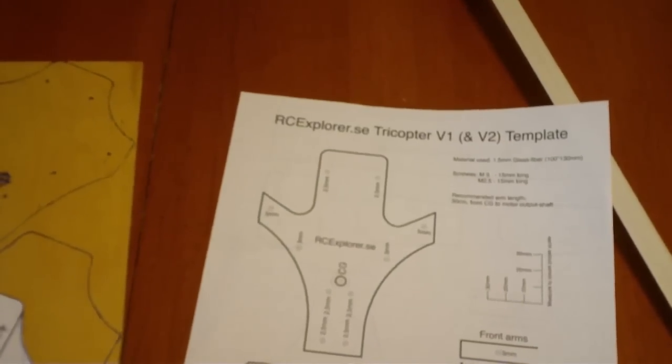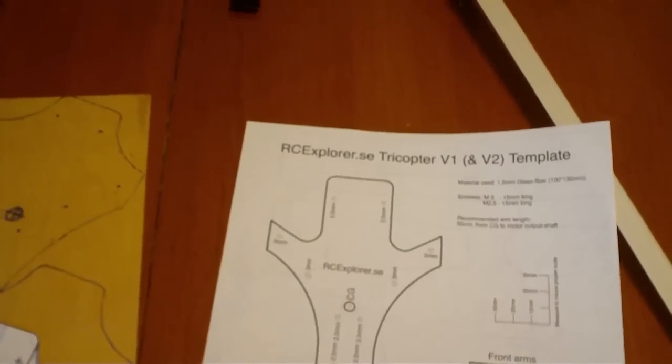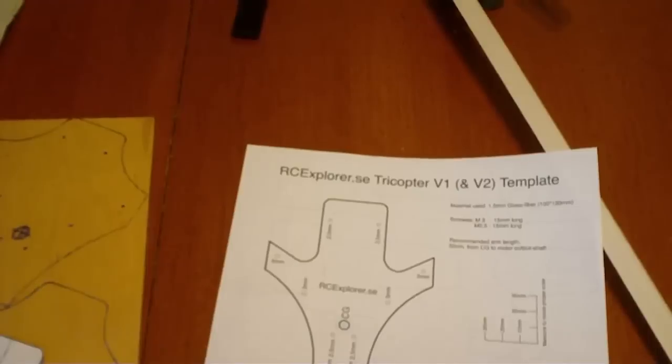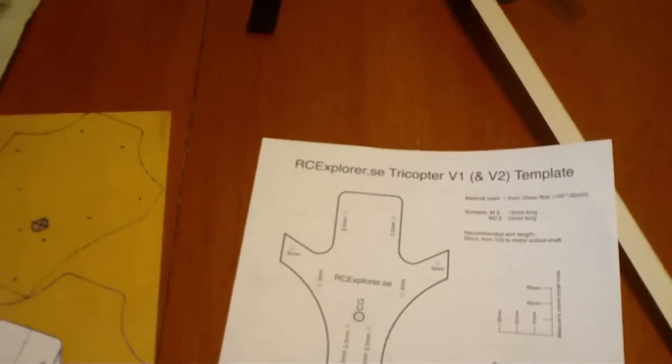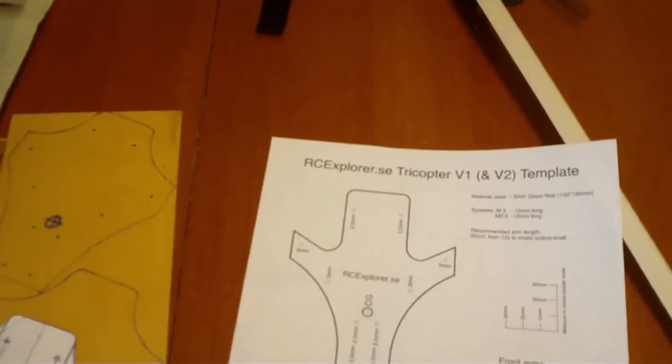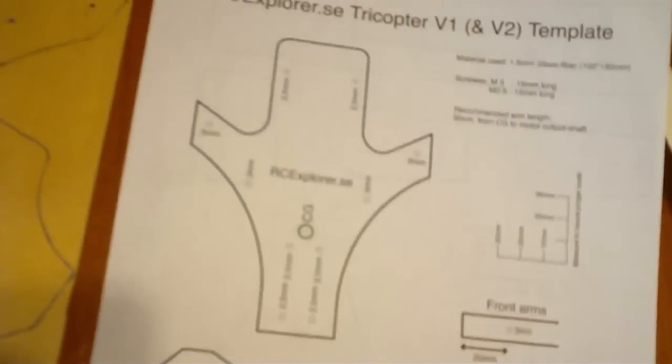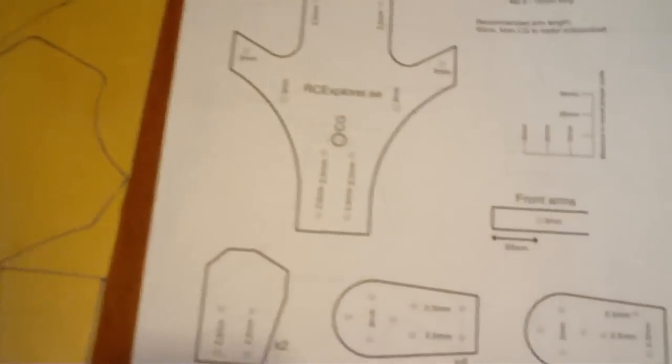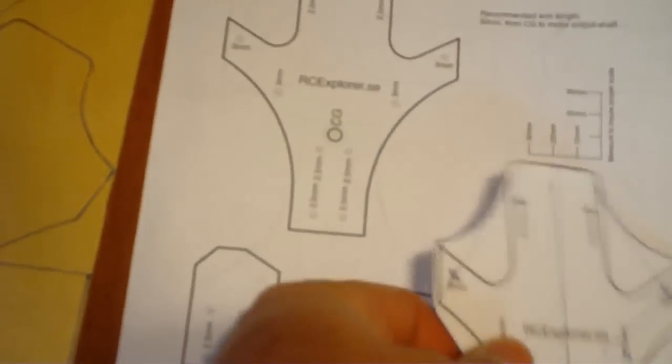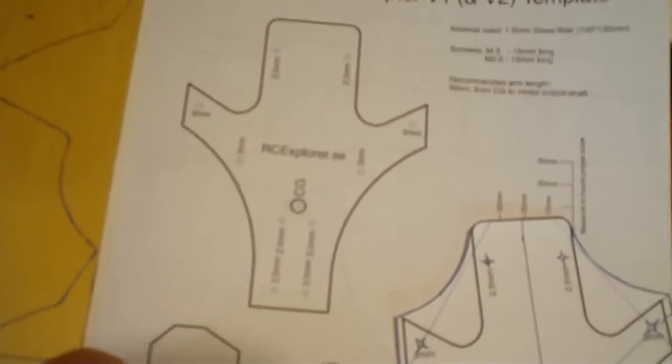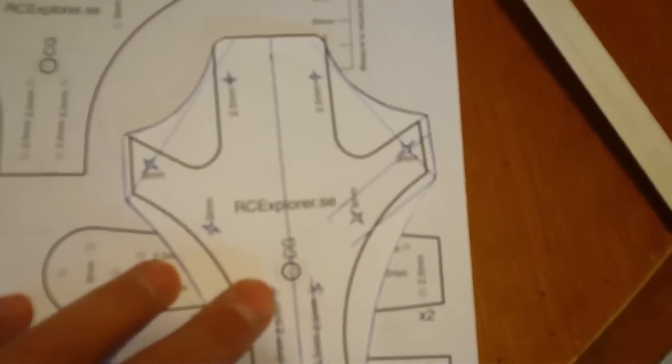Okay, this is build number one of the RC Explorer tricopter version 2.5. I took the PDF plans and changed them a little bit, took the basic idea and modified it, so that's what I'll be cutting out.